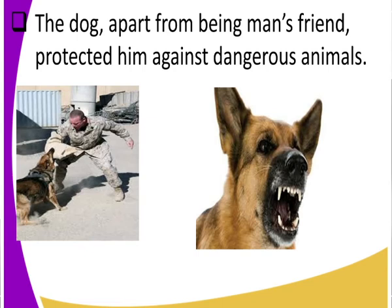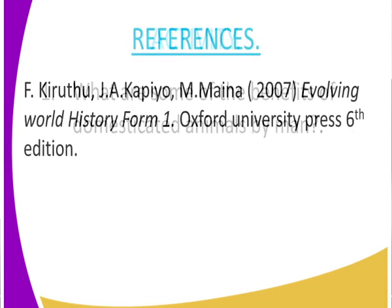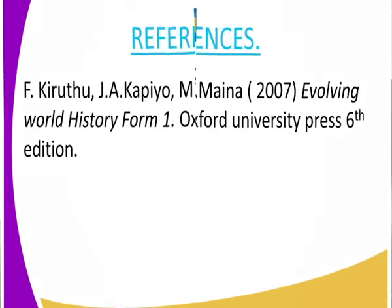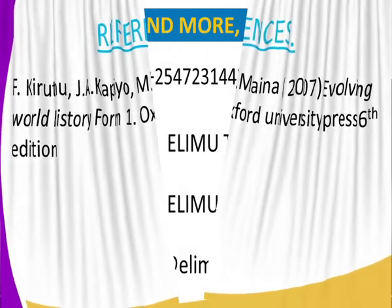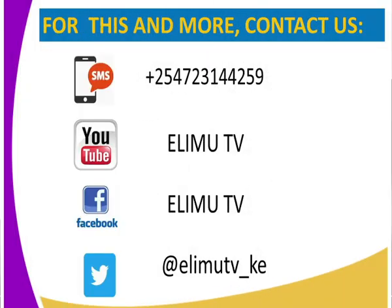Now class, can we get to state some of the benefits of these domesticated animals by man? Also get to refer to the textbook 'Evolving World, History and Government, Form One' by the Oxford University Press. And as always, this is Alimu TV, your favorite channel where you get to watch and learn.